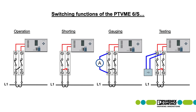The operation with closed switches. The shorting with additional accessories. The gauging by looping in an ammeter. And the relay testing by plugging in a testing device.